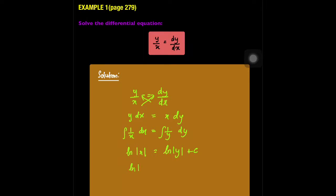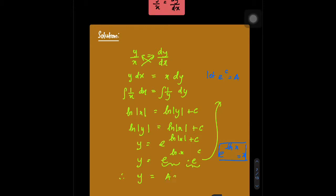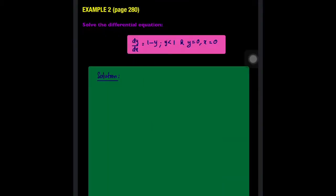Rearranging: ln|y| = ln|x| + C. To make y the subject, remove the ln by raising e to the power: y = e^(ln|x| + C) = e^(ln x) · e^C. Let e^C = A (any constant). Using the property e^(ln x) = x, the final answer is y = Ax.